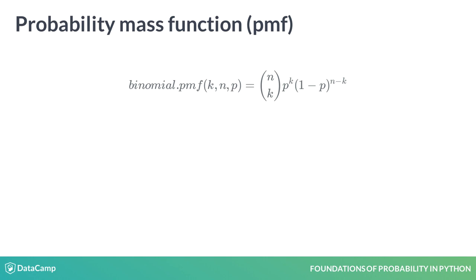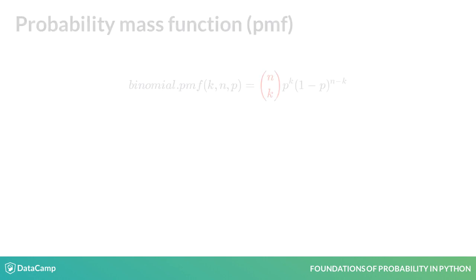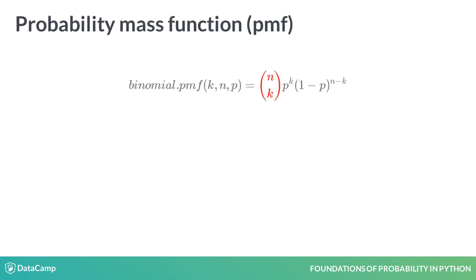The binomial probability mass function allows you to calculate the probability of getting k heads from n coin flips with p probability of getting heads. The formula multiplies the number of different ways you can get k successes out of n coin flips by the probability of success raised to the number of successes, k, by the probability of failure, 1-p, raised to the number of failures, n-k.